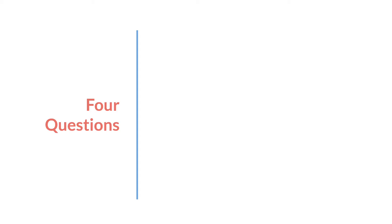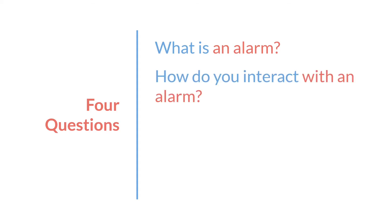I want to leave you with four questions in two sets of two. The first set is: what is an alarm? And by this I don't mean what is an alarm in code — I mean if someone walked up to you on the street and said 'what is an alarm?', what would your response be? What's a good general definition of an alarm? Second, how do you interact with an alarm? Think of some real alarms in your life. How do you interact with them? One example might be that you set them.